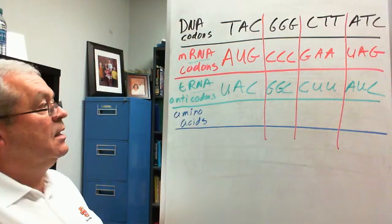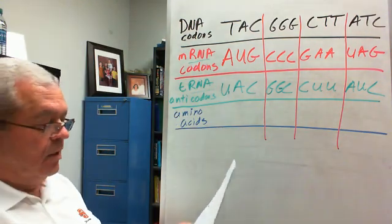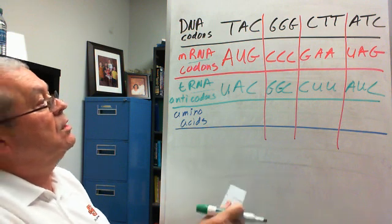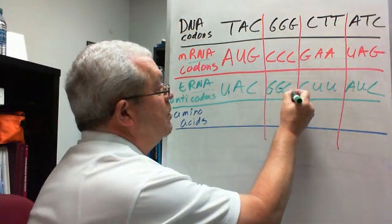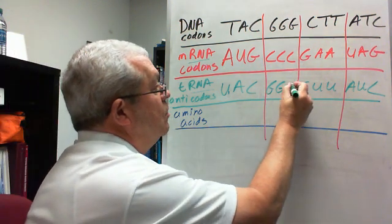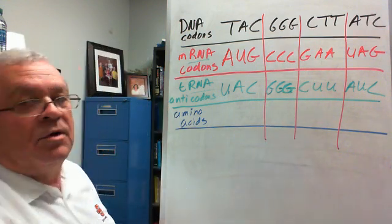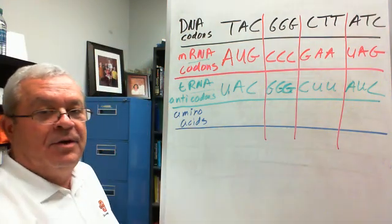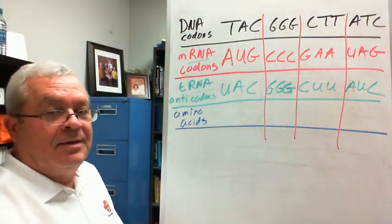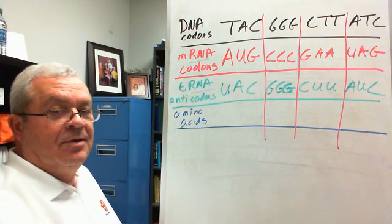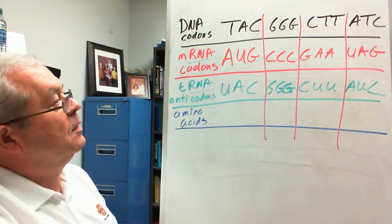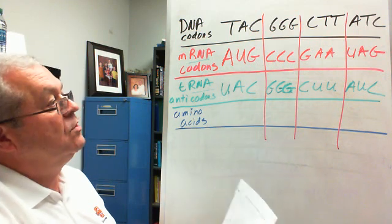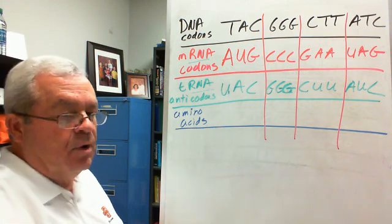Now let's see if I did that right — I've got my little cheat sheet here. U, A, C, G, G, G. Oop, what did I do? This should be G, G, G. Of course — what they taught me to say in teacher school about 40 or 50 years ago is, I was just checking to see who was paying attention. Oh my goodness. Yeah, G, G, G. And then C, U, U, and A, U, C. Okay, I got them right. Great.